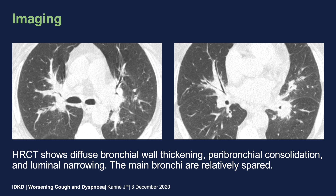These two axial images show similar findings, with diffuse bilateral bronchial wall thickening, peribronchial consolidation, and luminal narrowing. Note that the peribronchial consolidation has rather irregular margins. The main bronchi, as on the previous image, are relatively spared.